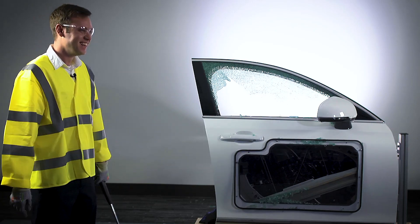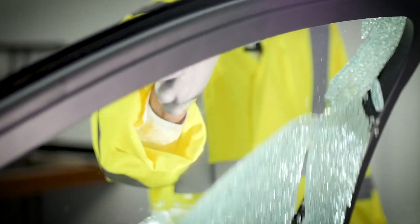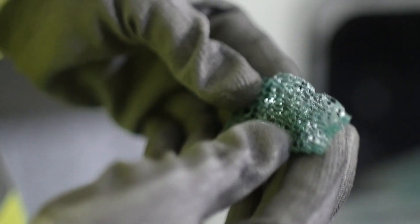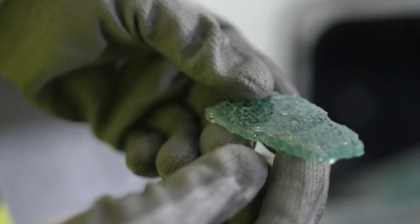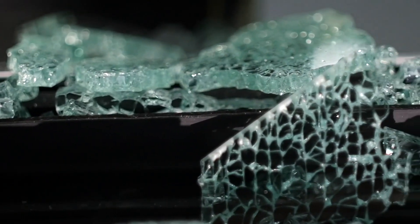So as you can see the glass does hold together in some areas but still shatters into all these many pieces and falls apart very easily. Now the pieces are non-cutting so that's good, but it wouldn't prevent any object from entering into the vehicle which is the main thing where this glass falls short.